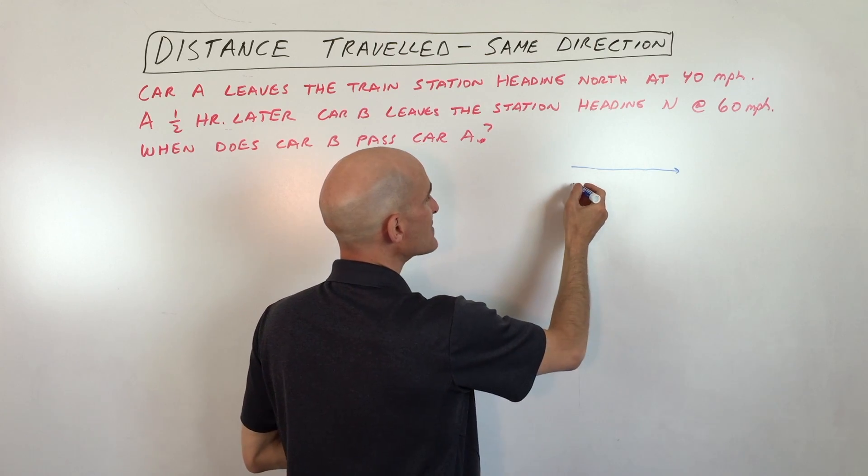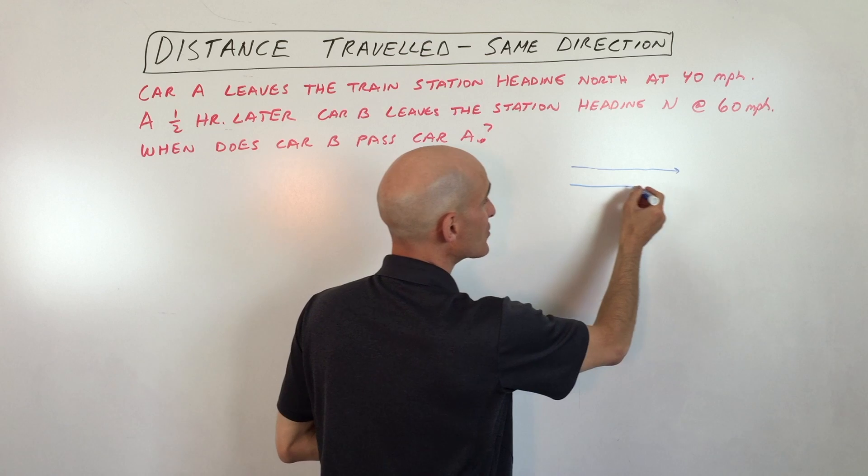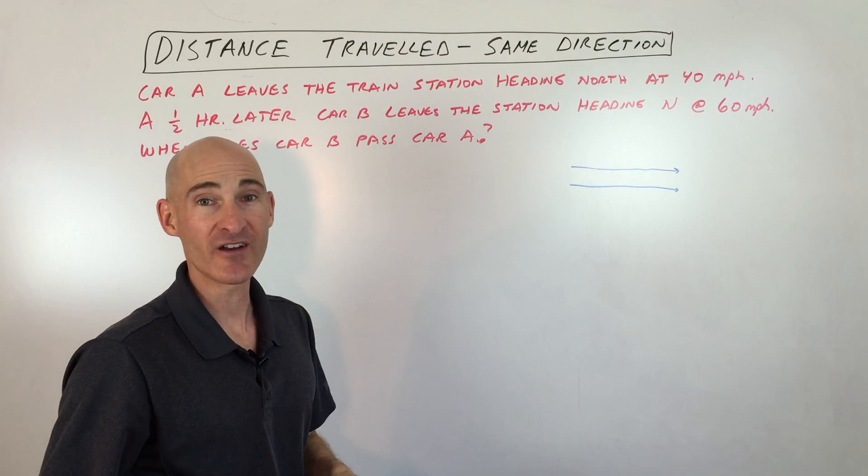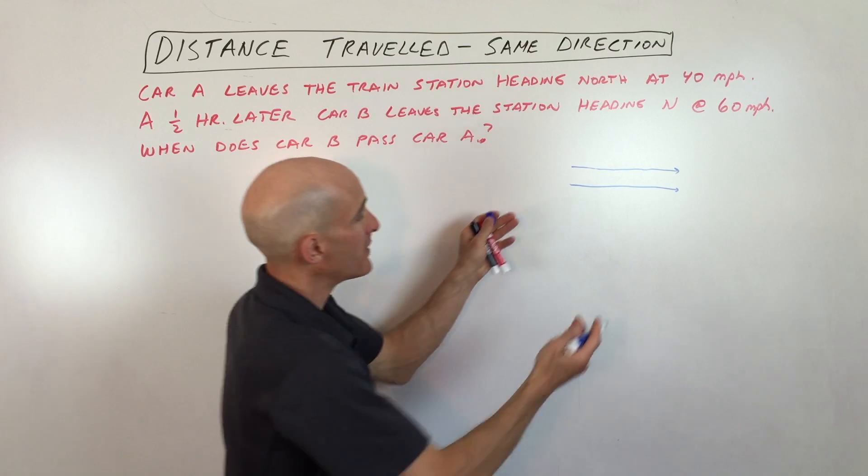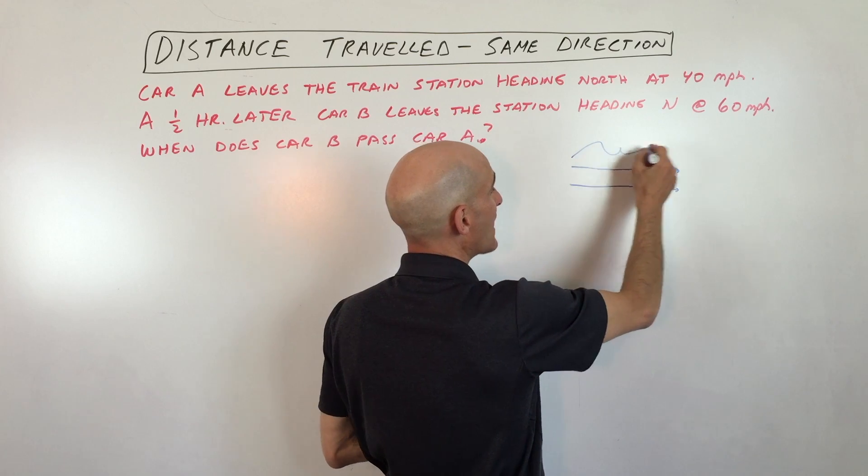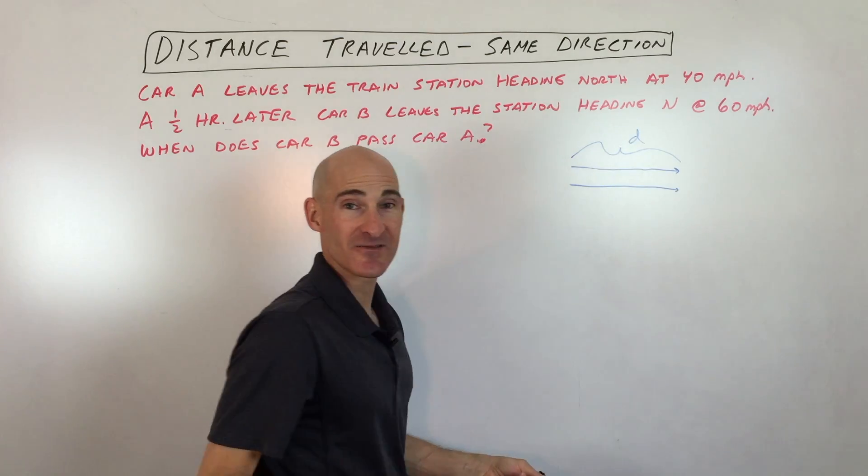And then what happens is that car B leaves a half hour later, but it's going faster. So eventually it's going to catch up to the first car. Makes sense? So when car B catches up to car A, they've traveled the exact same distance.